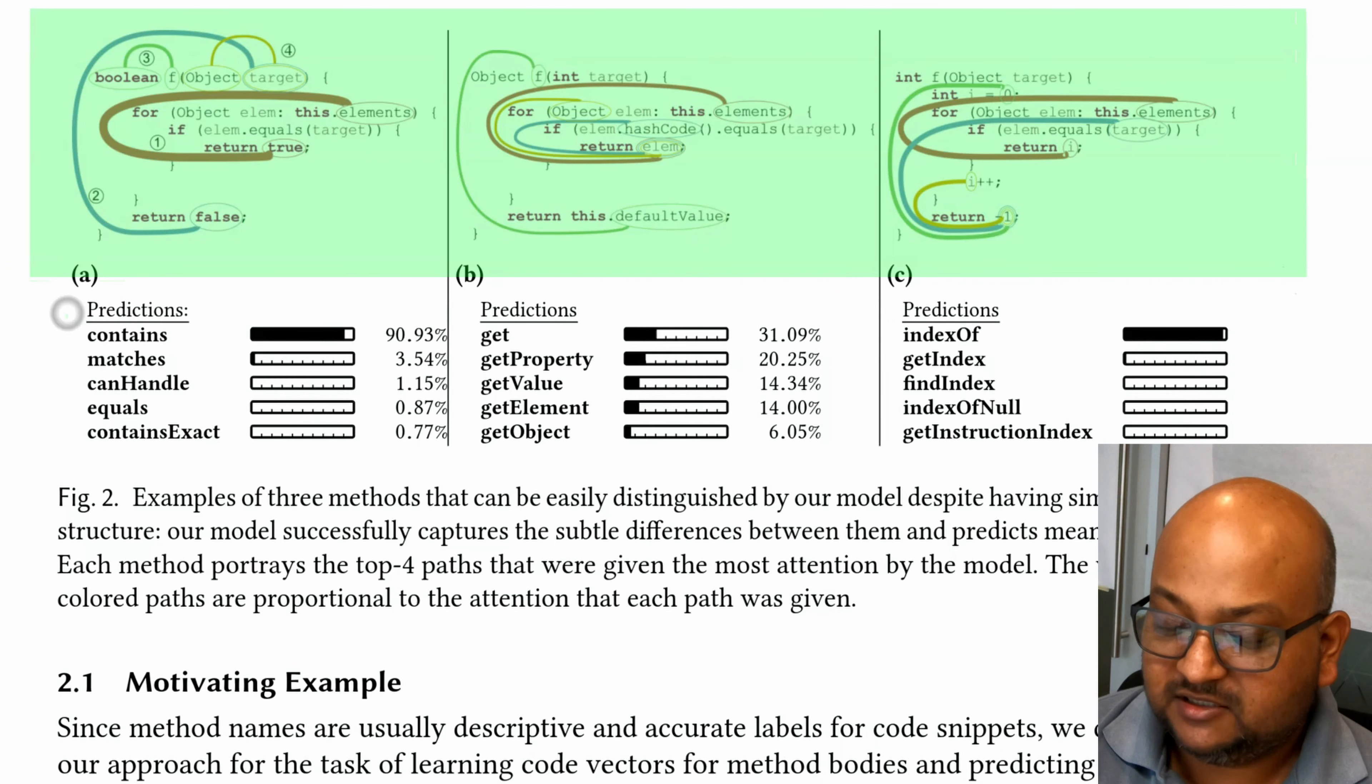As you can see, for the first one, it suggests the name contains. For the second one, it suggests get. And for the last one, it suggests indexOf. Let's work through this example to see how this technique works.